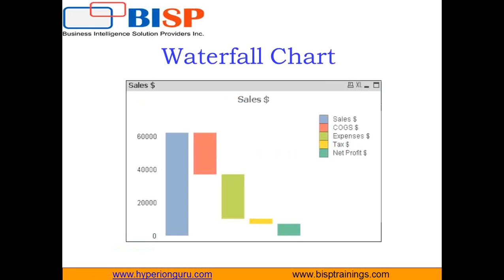This is a sample picture of a waterfall chart that we will be creating in QlikView. As you can see, we have created a very colorful waterfall chart. A waterfall chart is a form of data visualization that helps in determining the cumulative effects. It is also known as a flying brick chart or a Mario chart due to its appearance. The COGS, expenses, and tax are in a floating mode — COGS is basically cost of goods sold.